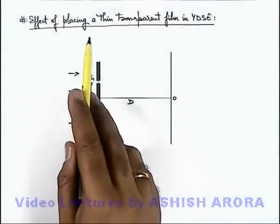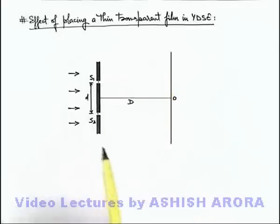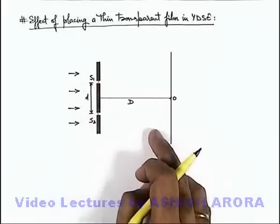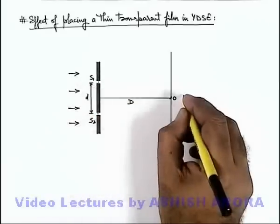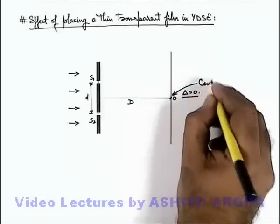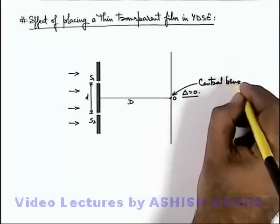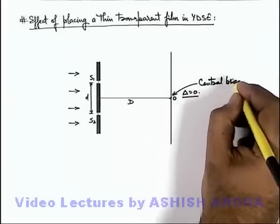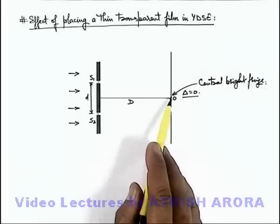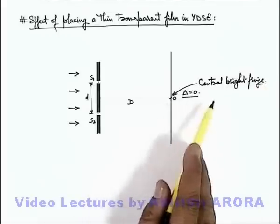Let us now discuss the effect of placing a thin transparent film in YDSE, in front of any of the slits. Here you can see this is a typical YDSE setup, in which at the screen centre the 2 light waves are travelling equal paths from slits S1 and S2. The path difference is equal to zero, so this will be the central bright fringe where intensity is maximum, obtained due to constructive interference.